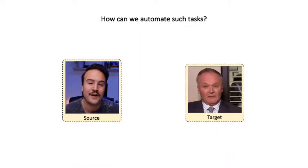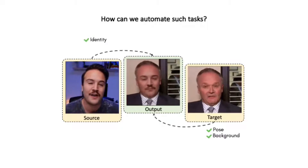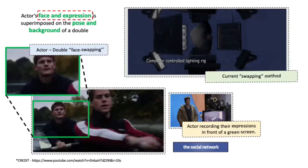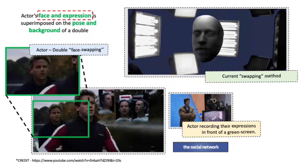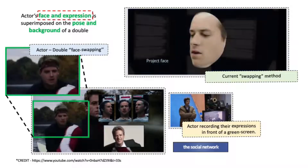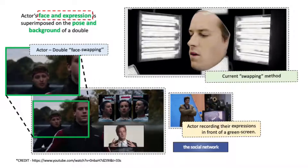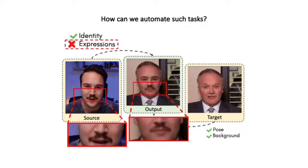One can consider computer vision face swapping techniques as an approach to automate this task. Face swapping aims to swap the identity from a source face video to a target face video such that all other characteristics of the target video are preserved. However, one important requirement in actor double face swapping is the transfer of expressions from the source video of the actor to the target video of the double. Thus, one cannot naively use face swapping for the task, as it does not aim to swap the expressions of the source face video.